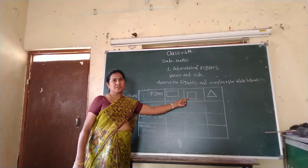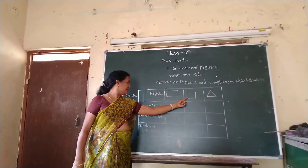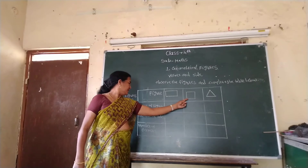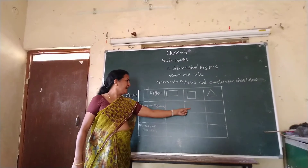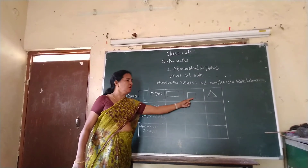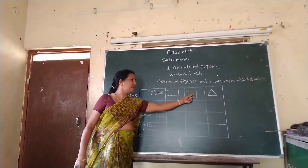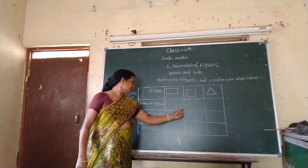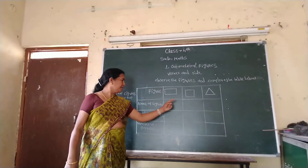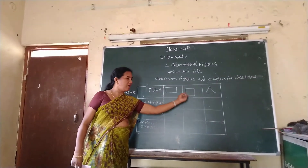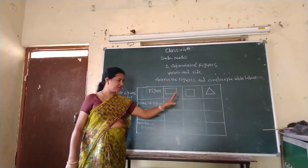Iska square kitnay? Kitnay side hai? One, two, three, four. This is a square. Iska side kitnay hai? Four. Aur corner bhi four hai.